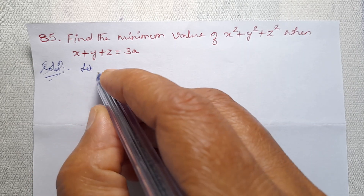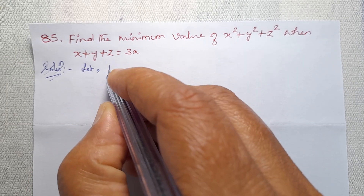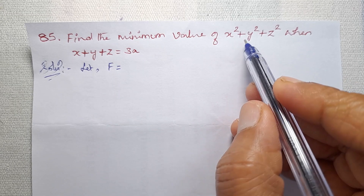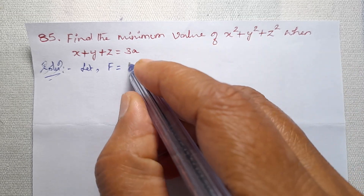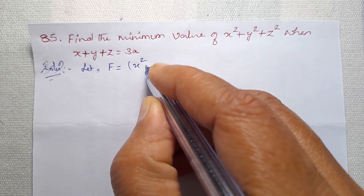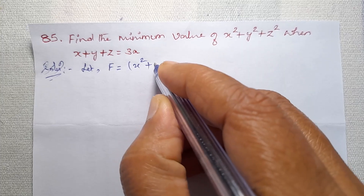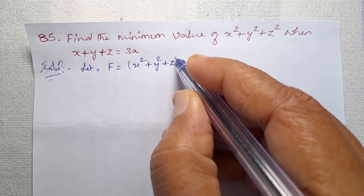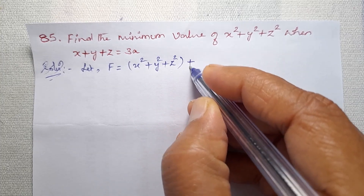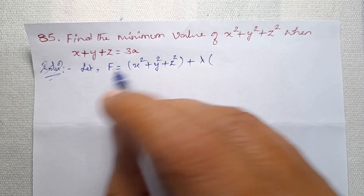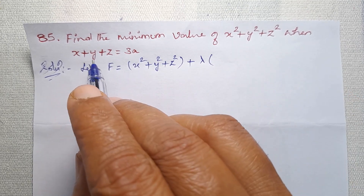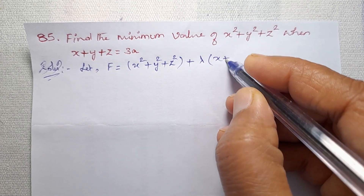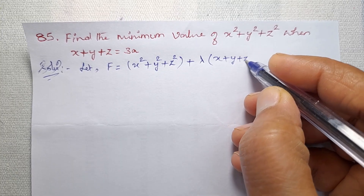Solution: Let F = x² + y² + z² + λ(x + y + z). That is, F = U(x, y, z) + λ · Φ(x, y, z), where Φ(x, y, z) = x + y + z.